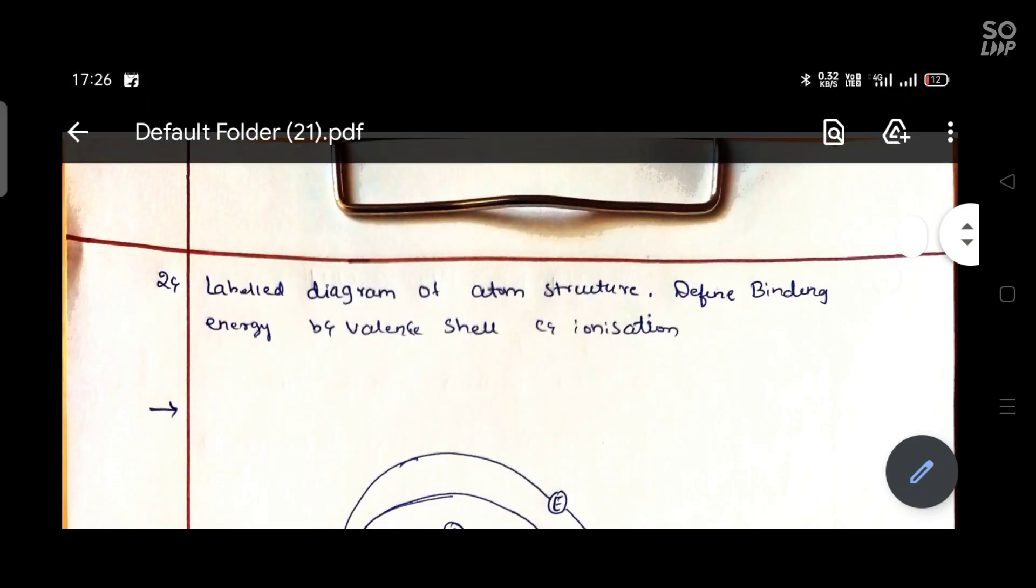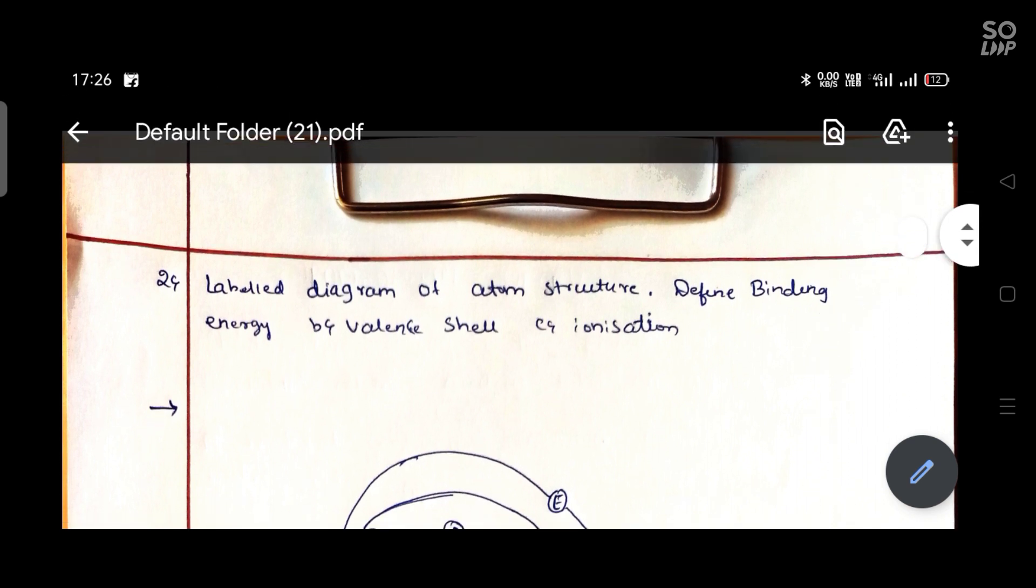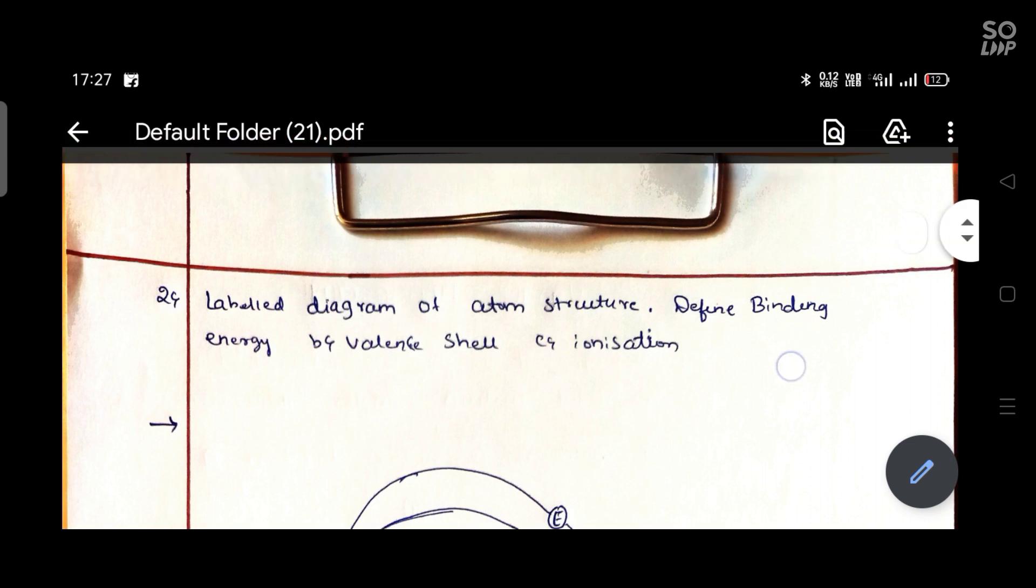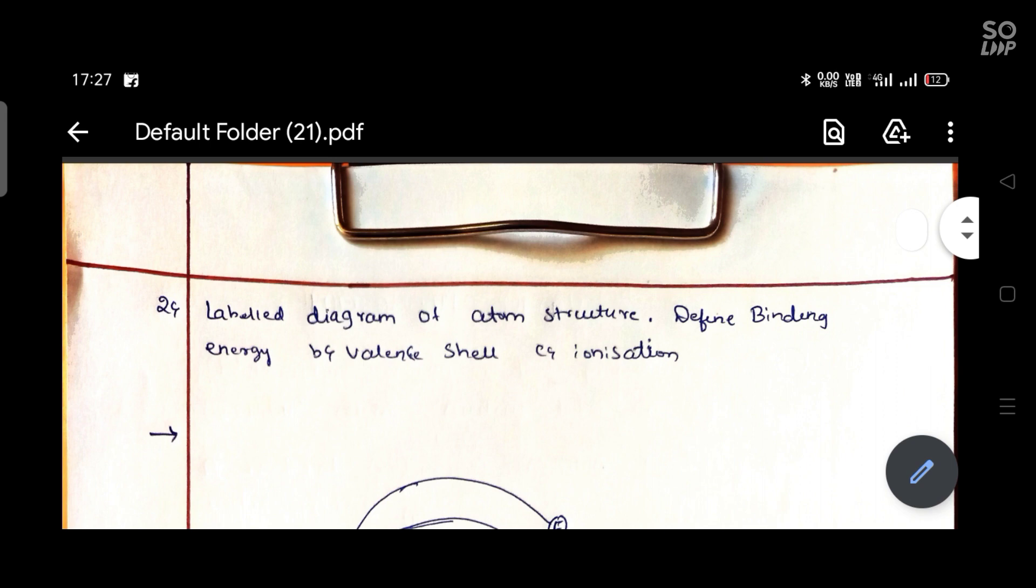Hello friends, today we are going to discuss radiation physics, a very important and interesting question. The question is: label diagram of atom structure, define binding energy, valence shell, and ionization. The marks distribution - diagram gets two marks, binding energy, valence shell, and ionization definitions each get one mark, so definitions total three marks. This is a five marks question on atom structure.